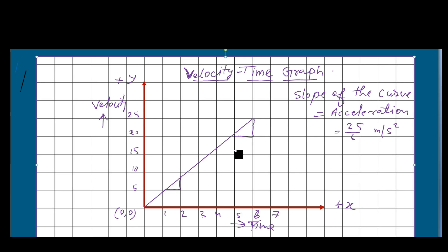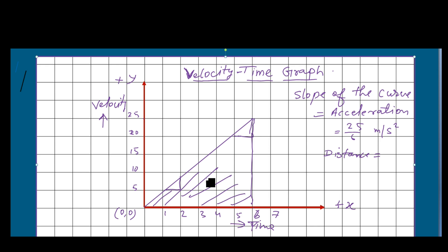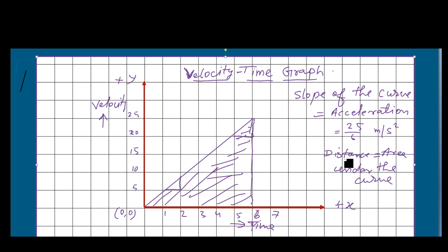Distance equals the area under the curve. If we color the area under this curve and find the area of this triangle, it will be equal to the distance traveled. So the area under the curve gives the distance.